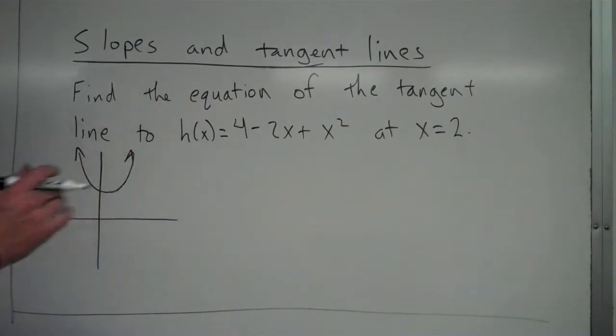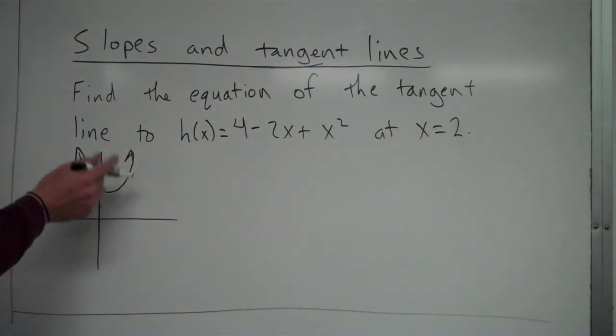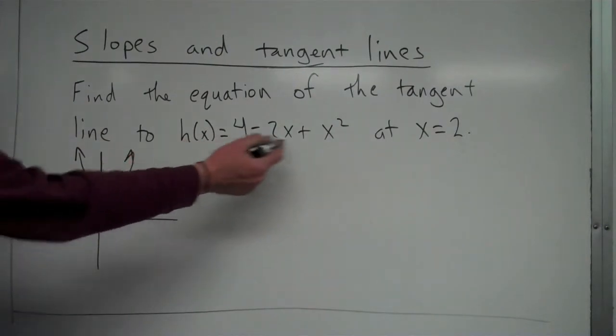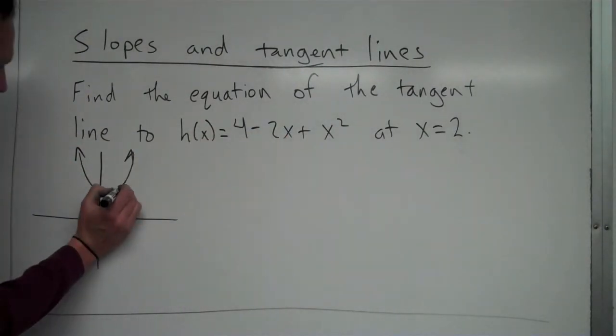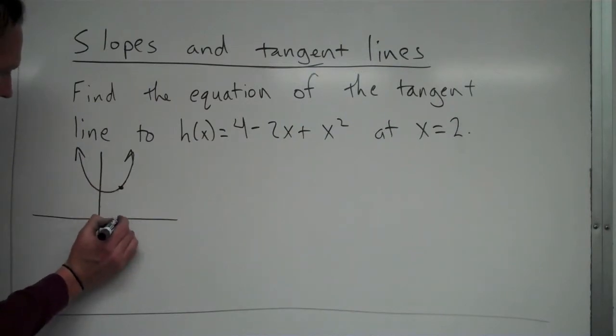So a tangent line, as we've talked about before, if you look at the graph, I've drawn a real basic sketch of this graph right here. Very basic sketch. So at x = 2, let's say that's right here. So we're saying that's x = 2.